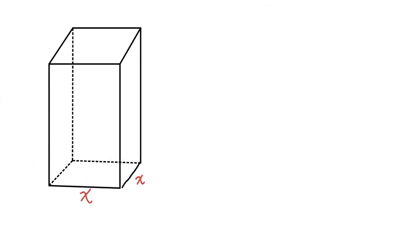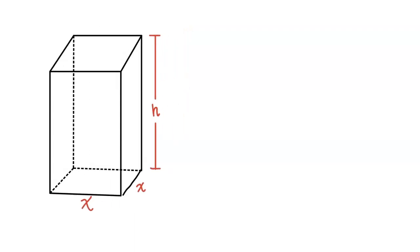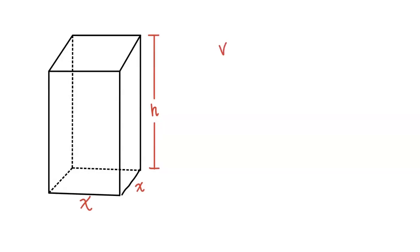I will call the height of this container h. From the top to the bottom is h. The volume of a rectangular prism is length times width times height.